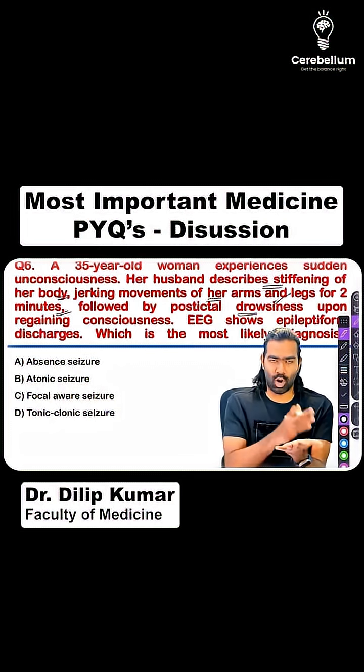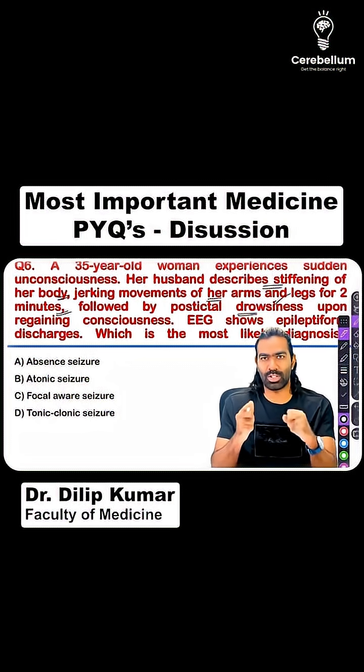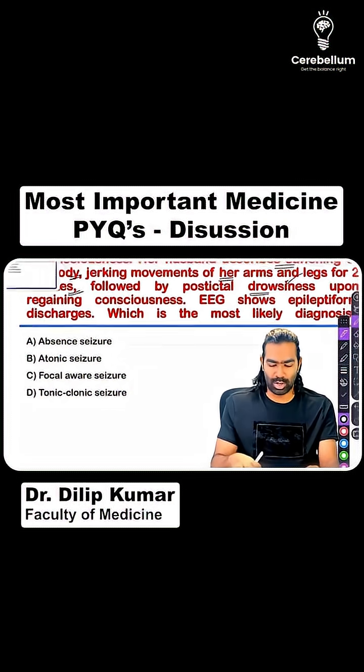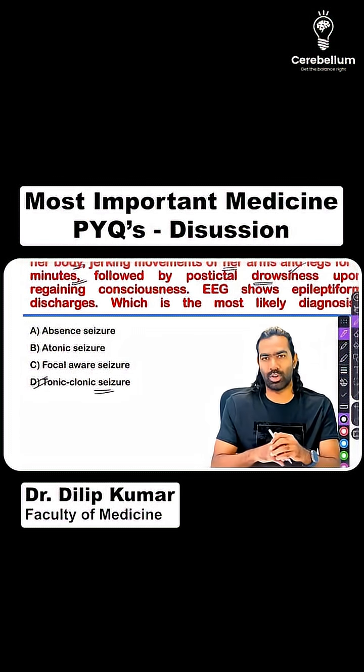So, you have an aura, ictal state, and post-ictal state. Within that, you have the tonic contraction followed by the clonic jerking. So, this is a classic generalized tonic-clonic seizure.